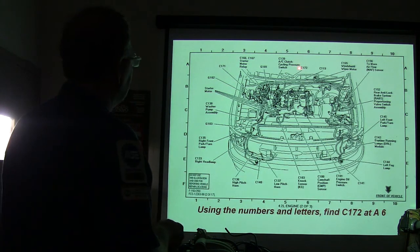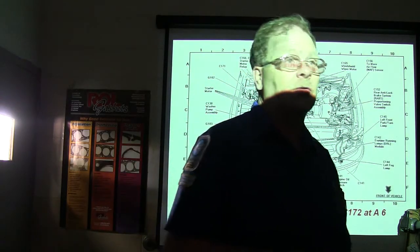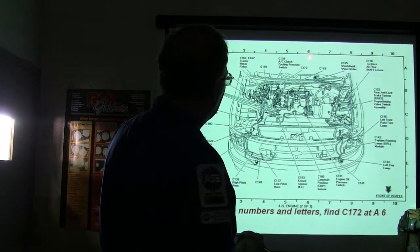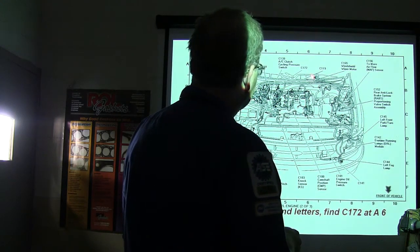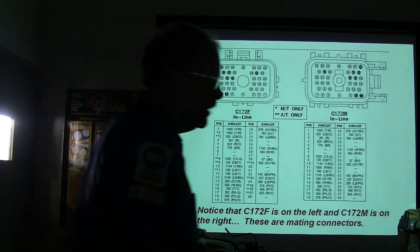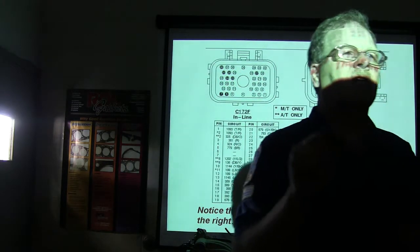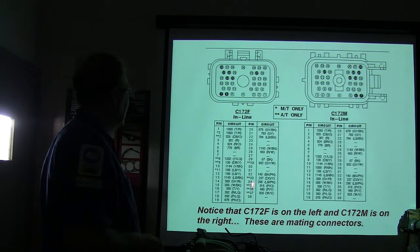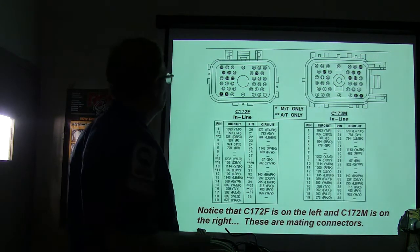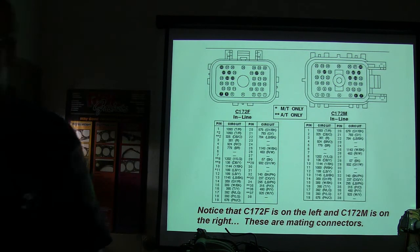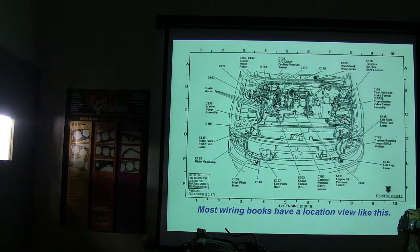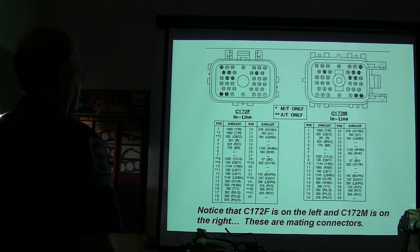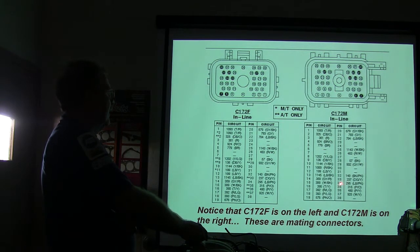Using the numbers and letters on the grid, that's location A6. When doing warranty repairs, we had to record the grid location of any repair. We need to go to the connector view to determine which pin we want to find. The circuit number is 295 — pin 34. You can see pin 34 on both sides of the connector because you're looking at mirror images of both sides. You pay attention to the wire color — that's a black-blue-pink wire, which is the color we're looking for.